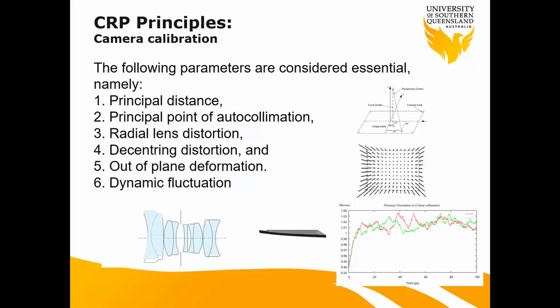So what are the camera calibration parameters we need to define to process images correctly and get high-precision measurements? The first is the principal distance — the distance from the center of the camera to the image plane, which is essentially the focal length. The second is the principal point of auto-collimation, basically the center of the image. These two we already know. The new parameters are the remaining four.